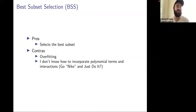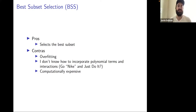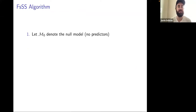Another con is that best subset selection can be computationally expensive, especially as P approaches N and N is also relatively large. This motivates using a slightly different algorithm — forward stepwise subset selection — to reduce the computational expense.